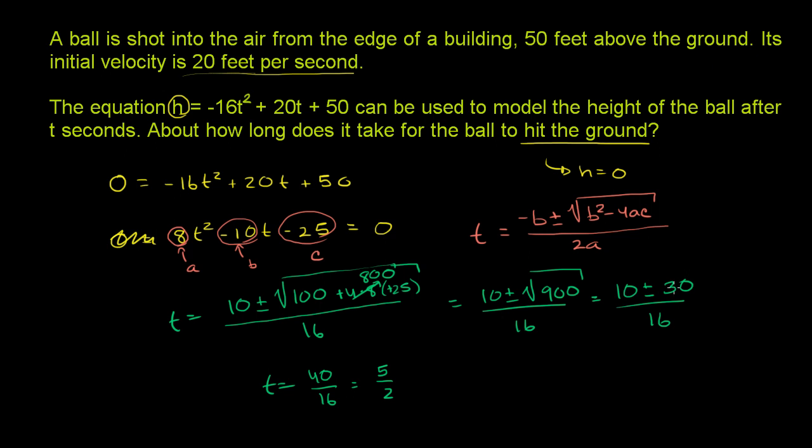If we subtract the 30, we'd get 10 minus 30. Or t is equal to 10 minus 30, which is negative 20 over 16. Divide the numerator and the denominator by 4, you get negative 5 over 4. Now we've got to remember, we're trying to find a time. And so a time, at least in this problem that we're dealing with, we should only think about positive times.